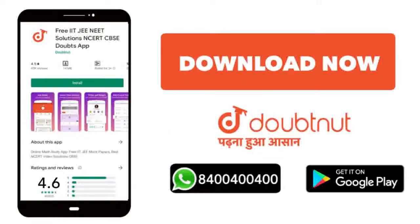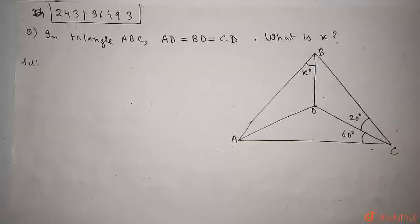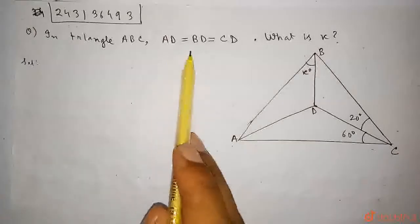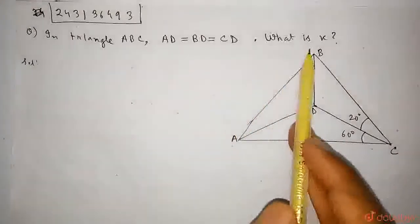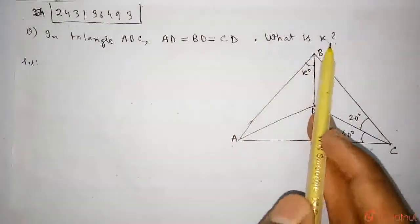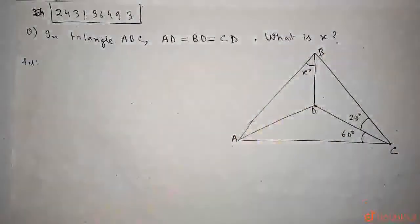In this question it is asked: in triangle ABC, AD is equal to BD is equal to CD. What is the value of X we need to find out?